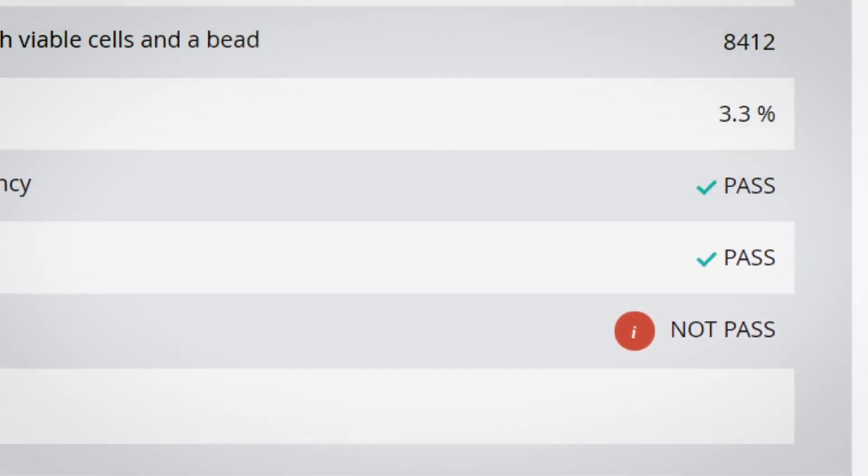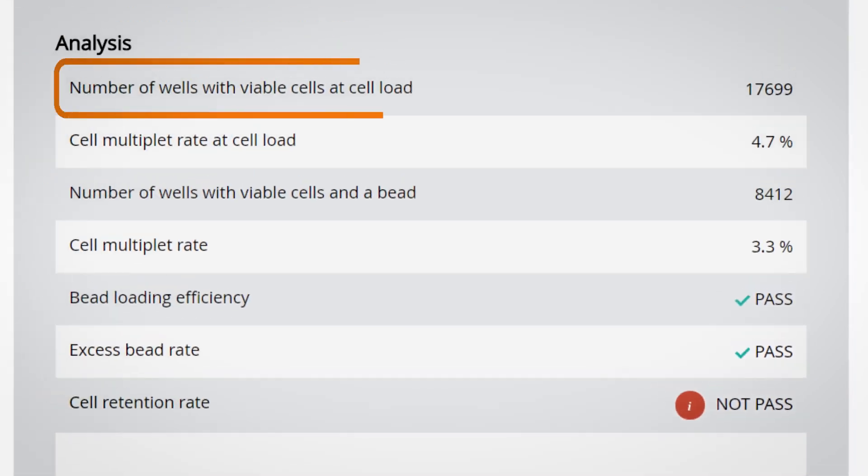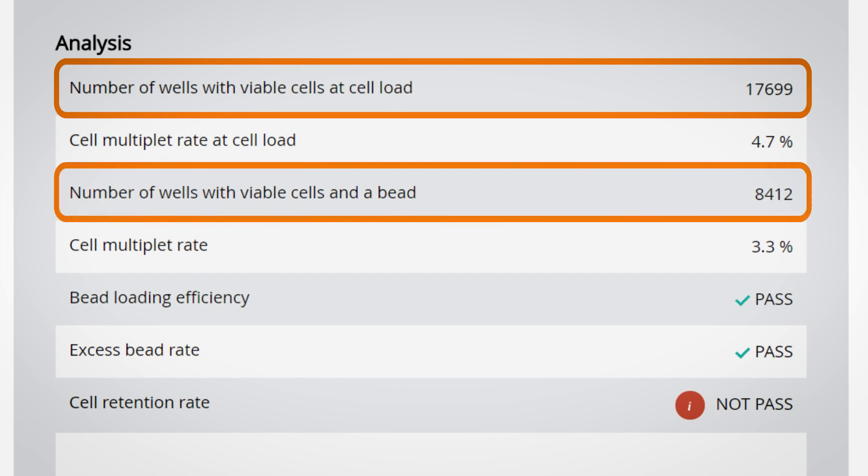In this example, we loaded 20,000 cells and captured 17,699 at initial cell load, which is a good capture rate. However, after bead loading and washing, we only have 8,412 cells left in the cartridge with beads. This is a very large loss of cells and is further punctuated with the cell retention rate not passing. Again, we can stop the experiment if this is an unacceptably large loss of cells.